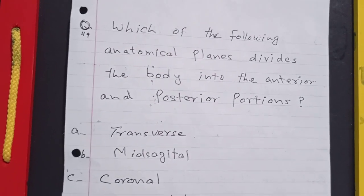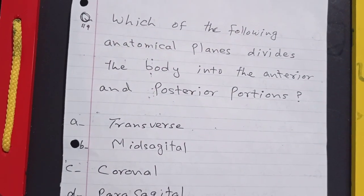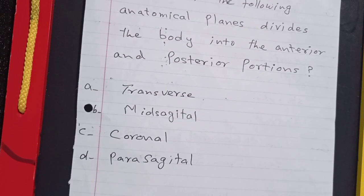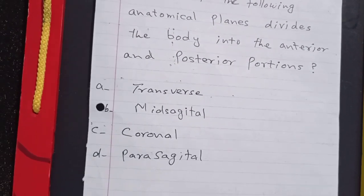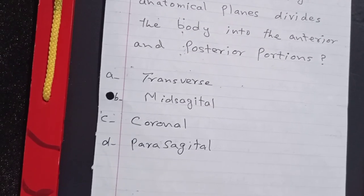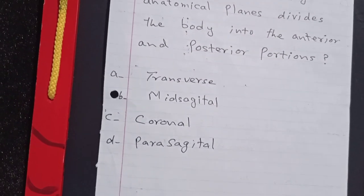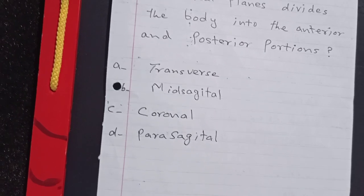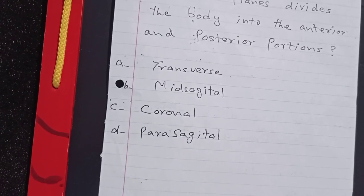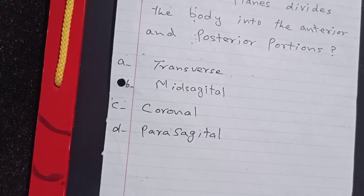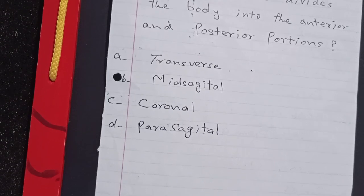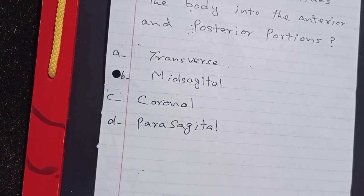Which of the following anatomical planes divides the body into the anterior and posterior portions? Transverse, midsagittal, coronal, or parasagittal. The answer is C: coronal.